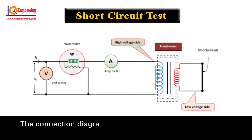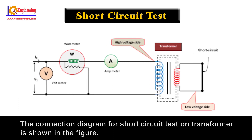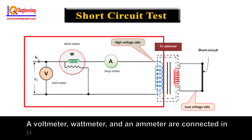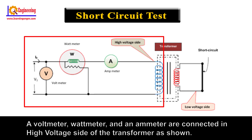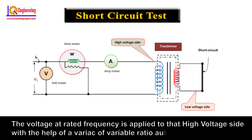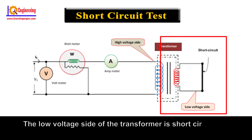The connection diagram for short circuit test on transformer is shown in the figure. A voltmeter, wattmeter, and an ammeter are connected in the high voltage side of the transformer as shown. The voltage at rated frequency is applied to that high voltage side with the help of a variac, or variable ratio auto transformer. The low voltage side of the transformer is short circuited.